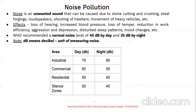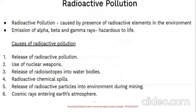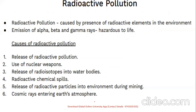Radioactive pollution is caused by radioactive elements emitting alpha, beta, and gamma rays. Sources include use of nuclear weapons, radioisotopes entering water bodies, chemical spills, particles released into the environment during mining, and cosmic rays in the Earth's atmosphere.